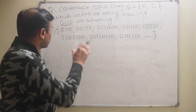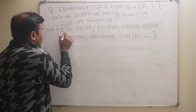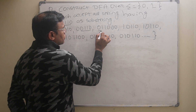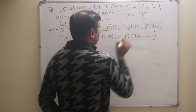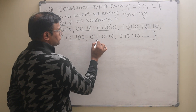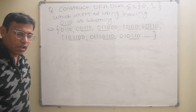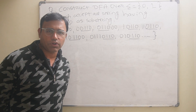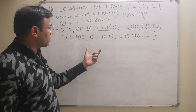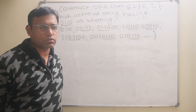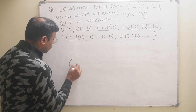The first step is to write down all the possible values which will contain 0,1,1,0 as a substring. As I have told you in earlier videos, the number of states will be the length of the substring plus one. Here the length of the substring is four, so the number of states will be five.